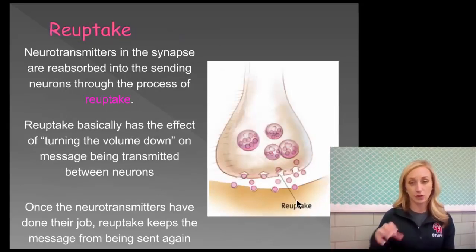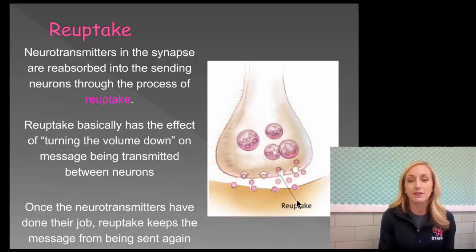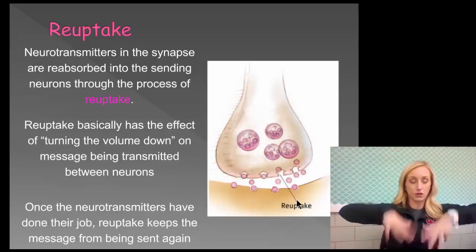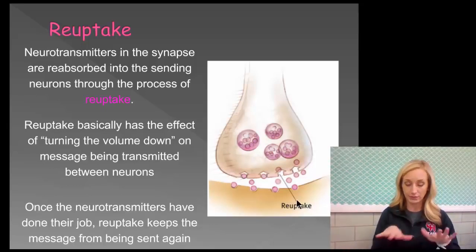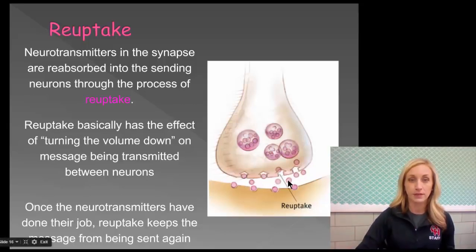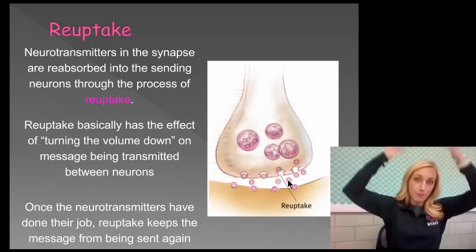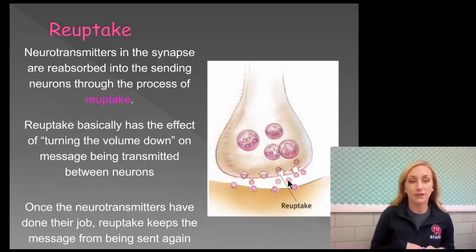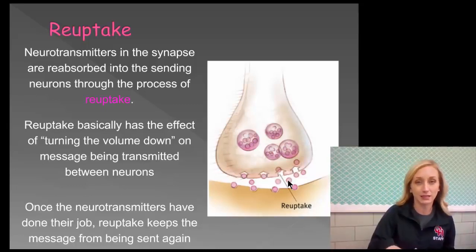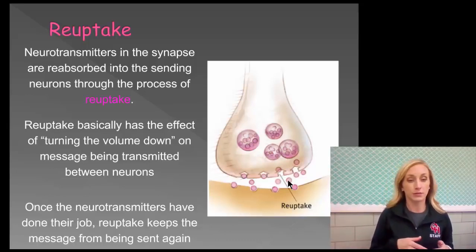Reuptake is a process that's incredibly important to our biology and neural firing. Neurotransmitters in the synapse that are left over after binding to receptor sites are reabsorbed back up into the sending neuron through the process of reuptake. It basically has the effect of turning the volume down on the message being transmitted between neurons — because the message has been sent, you don't need to send it again. Once the neurotransmitters have done their job, reuptake keeps the message from being sent again.